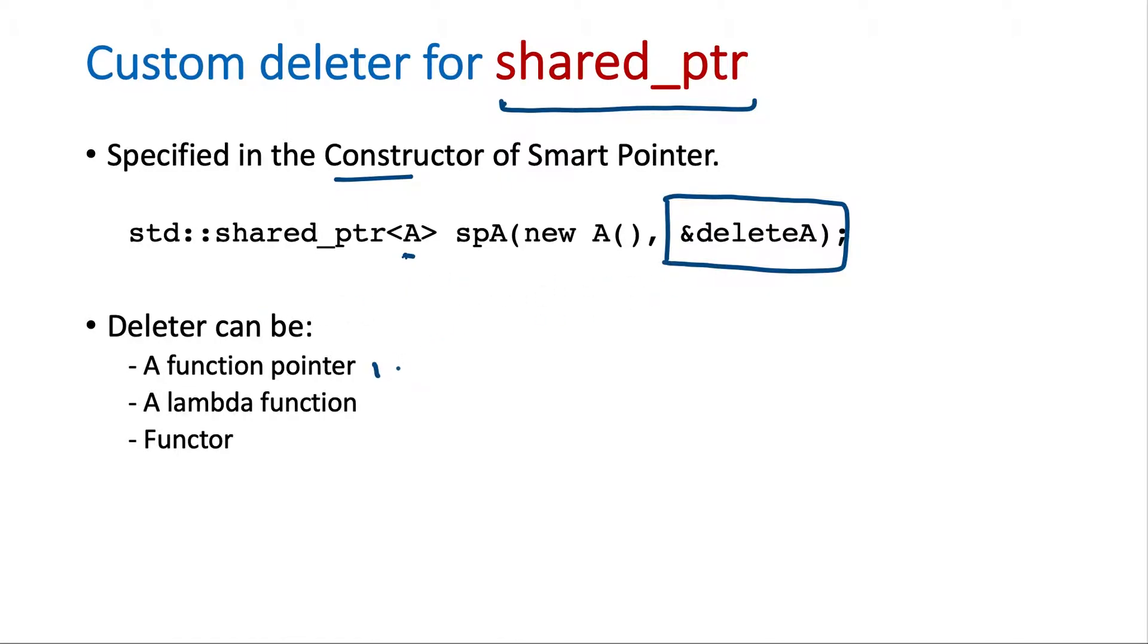So it can be either a function pointer like in this case. Or it can be a lambda function where we will define here itself. And it can be a functor also where there is a class and it has the parenthesis operator defined. So let's see all of these cases one by one.